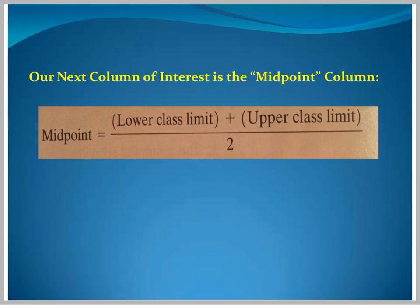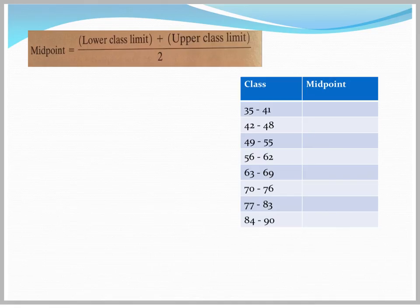Our next column of interest is the midpoint column. This column essentially just tells us the middle of each class, and is found from the formula of the lower class limit plus the upper class limit divided by 2. So essentially, it's just the average of the two limits of the class.